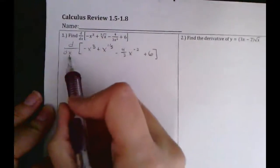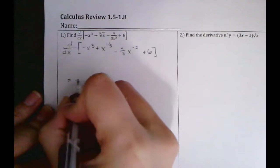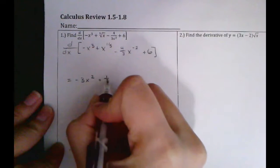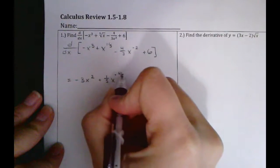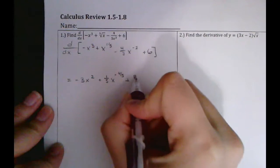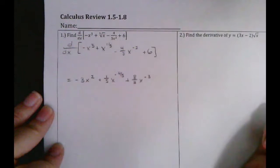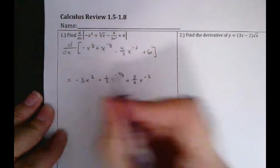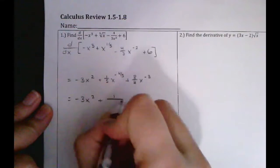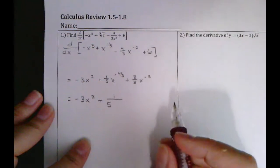Remember, this is just like a verb — it just says differentiate all of this. So you're going to write equals negative three x squared plus one fifth x to the negative four fifths, minus — no, plus — eight thirds x to the negative three, and then the derivative of a constant is zero, so that goes away. Then just rewrite it so that there are no negative exponents and things are back in radical form.